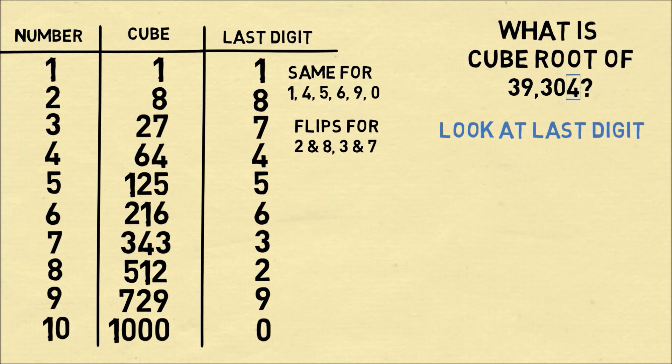We're going to put it in a box. So we look up 4 in the last digit, and that corresponds to the number 4. So we write down the number 4.